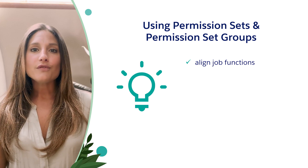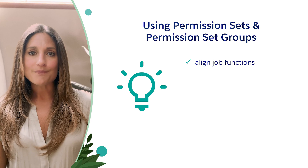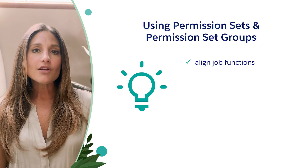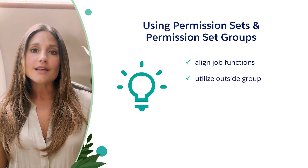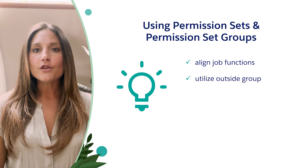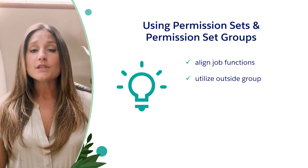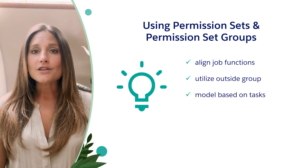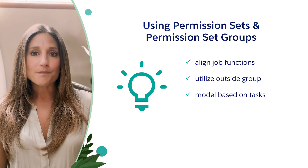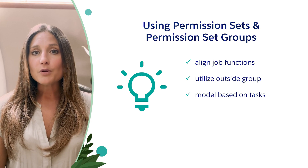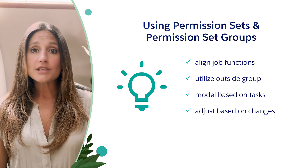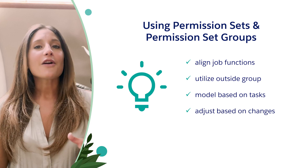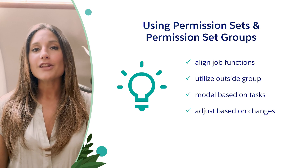If not, review that job function's goals. If you need to create a new permission set to include in your group, consider how it also could be used outside of the permission set group. Look at other job functions to see if users need to perform some of the same tasks. Model your permission sets on the tasks that your users perform. If the job function for the permission set group changes, you can update the permission set group — they are very easy to adjust and provide a lot of flexibility.